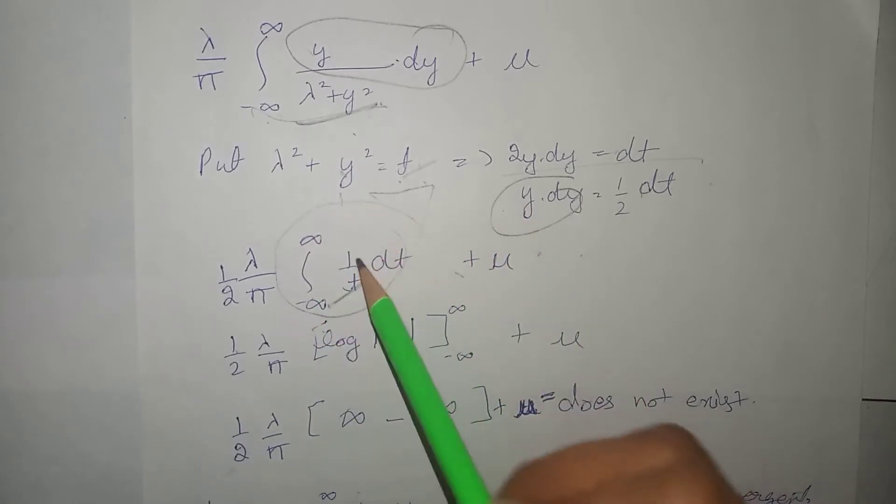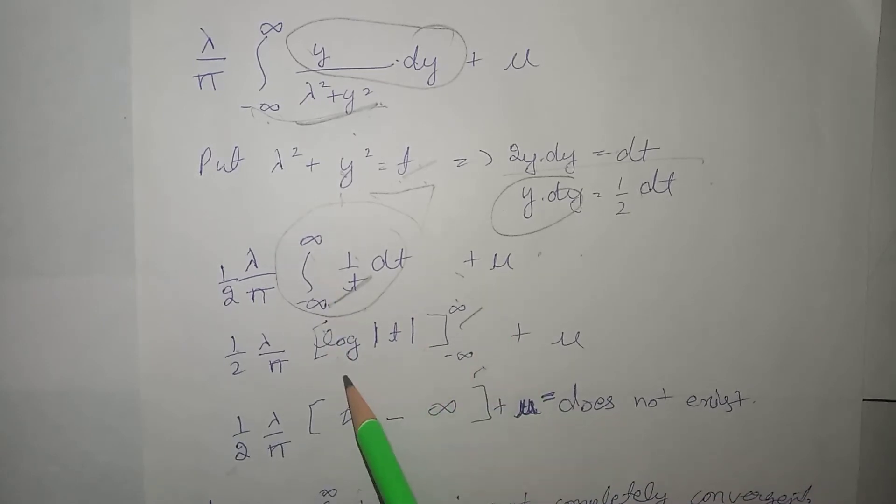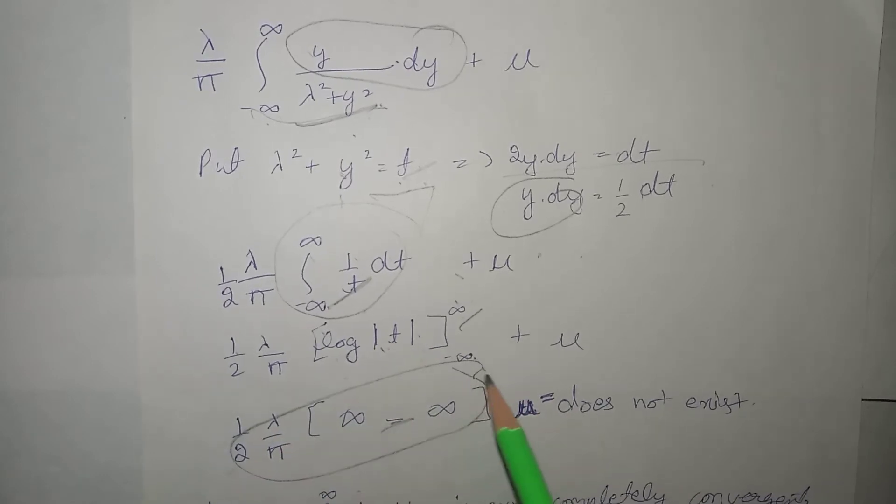Ab, aapne integration ki, agar wahan put ki, toh wo aajayegi log modulus of the t. Yeh limits humne ya hamper likh di hai, jab inko humne turn by turn is mein put kiya. That is, first of all, hum hum isko put kar denge, then minus, fir isko put kar denge. We know that log infinity is infinity. That is, overall, ye term toh humne infinity ban jayegi. Infinity plus mu is equals to infinity.